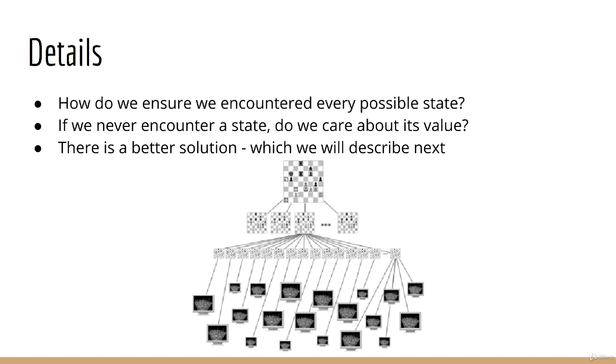It's important to realize that there are some complications with the algorithm as described. First, because we're only sampling, how do we ensure that we actually encounter every possible state in the number of episodes we played? In fact, we cannot. Although we may surmise that, because we didn't encounter a particular state, we don't need to know its value because our policy does not allow us to go there. You could simply ignore the value of those states in any subsequent function you plug the value function into. But there is a better solution.